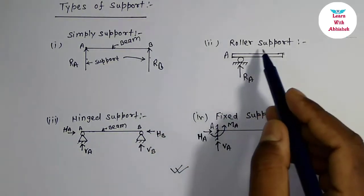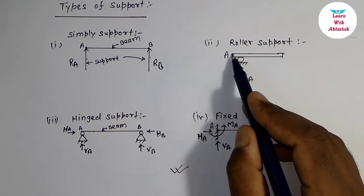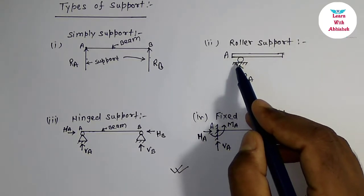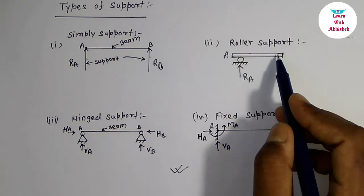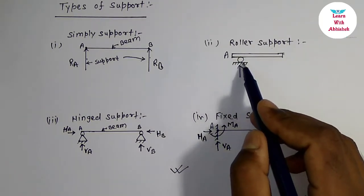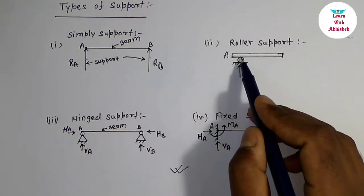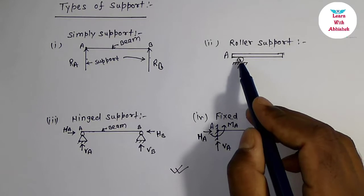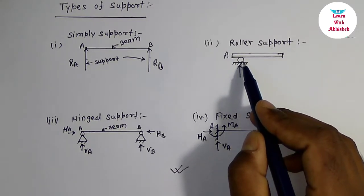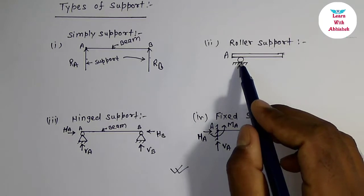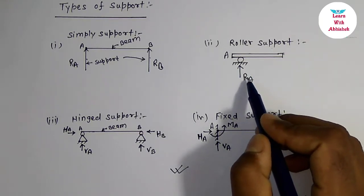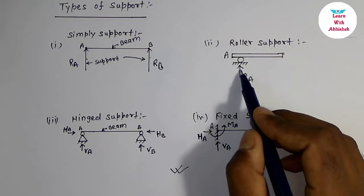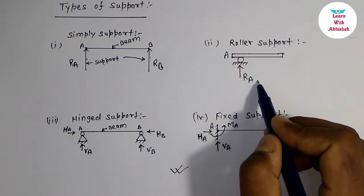Now we will discuss roller support. In roller support, the beam end is supported on a roller. This is the beam end which supports on a roller; this is the symbol for roller. At point A, the beam end supports on the roller, so at point A one reaction component acts, which is RA.